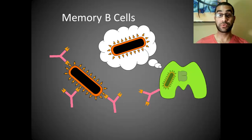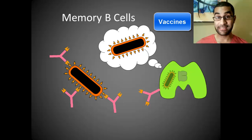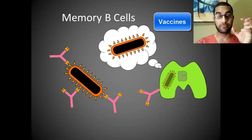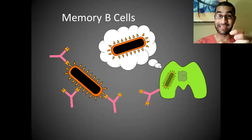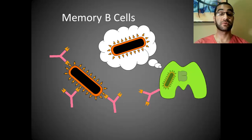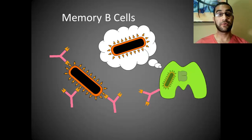This is also how vaccines work — the whole idea of making your memory cells. If you can make your memory cells, you can protect yourself from that exact same pathogen if exposed again in the future. So we call different types of protection natural immunity and artificial immunity.